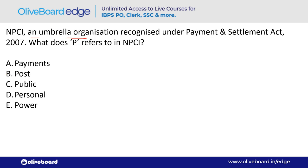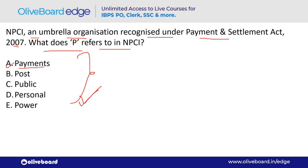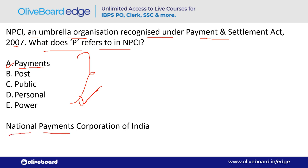NPCI is an umbrella organization recognized under the Payment and Settlement Act 2007. It is the umbrella organization for all retail payment systems in India. What does 'P' stand for in NPCI? P stands for Payments — option A. The full form is National Payments Corporation of India.